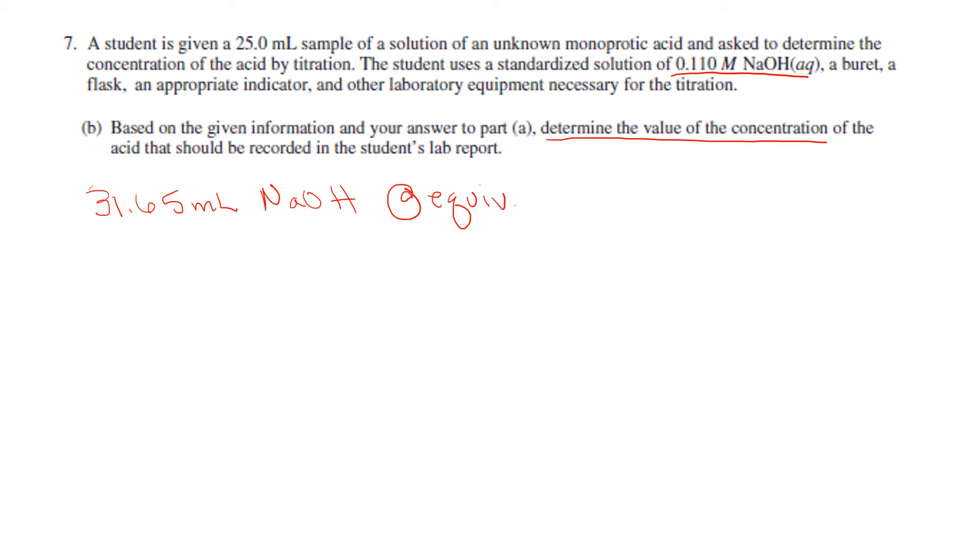The moles of my OH⁻ ions are going to be equal to the moles of my H⁺ ions, because this is a monoprotic—remember this is a monoprotic acid—so they're going to be equal. So in that case, I can use this formula to figure out the molarity of my acid.